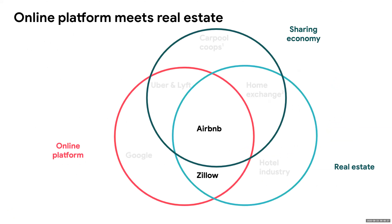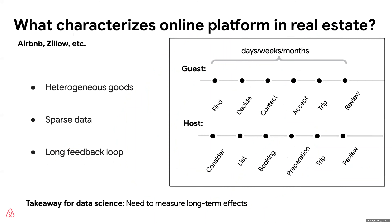Let's move on to another intersection: online platforms and real estate — companies like Airbnb, Zillow, and Compass. What do they have in common? One is that goods are very heterogeneous. Ron showed a few houses that looked similar, but the majority of cases they are not that similar, so goods are heterogeneous.